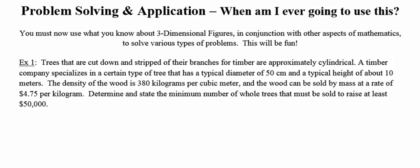In example one, it says trees that are cut down and stripped of their branches for timber are approximately cylindrical. I'm going to underline that word cylindrical because that gives me a clue as to what type of geometric figure we're working with. A timber company specializes in a certain type of tree. The typical diameter of this tree is 50 centimeters and a typical height is about 10 meters.